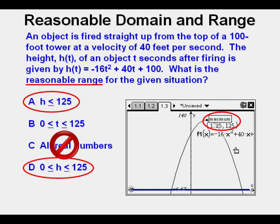It's the ground or zero elevation which also eliminates answer choice A because the rocket is not going to go through the ground or the object when it falls. So our answer choice is D, between 0 feet and 125 feet for range.